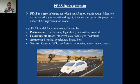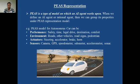What could be the actuators for this autonomous car? Obviously steering, accelerator, brake, and horn. With the help of steering, the car can take left or right or move ahead, so steering acts as an actuator. Accelerator and brakes are required to take actions regarding speed. Horn is also an actuator — with the help of horn the car gives indication to other vehicles.